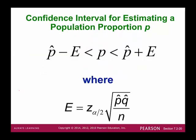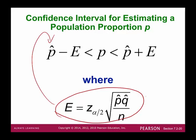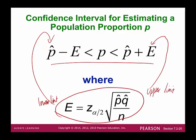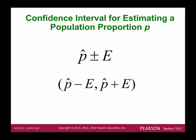Start with the margin of error, then form the confidence interval using p-hat minus E as the lower limit and p-hat plus E as the upper limit. You can also write it as p-hat ± E, or in interval notation as (p-hat minus E, p-hat plus E). This confidence interval should eventually contain the population proportion P.